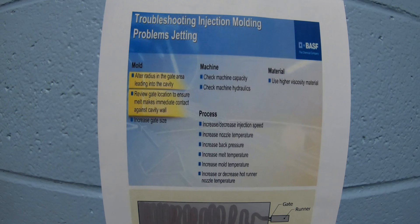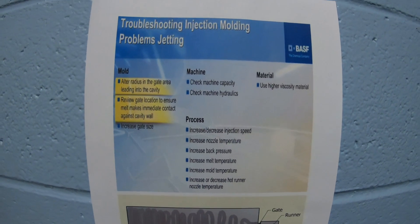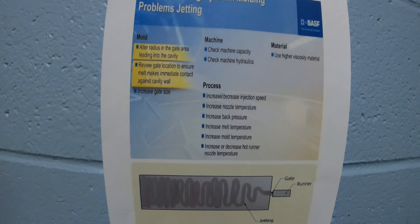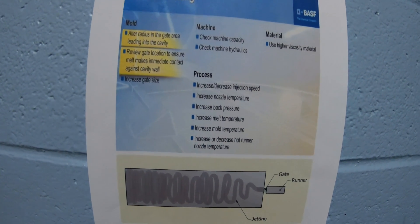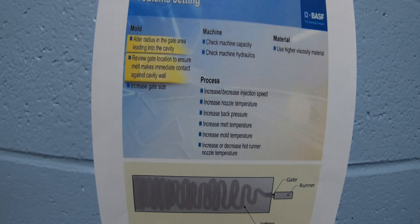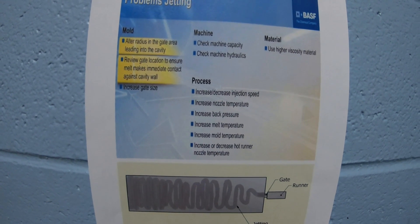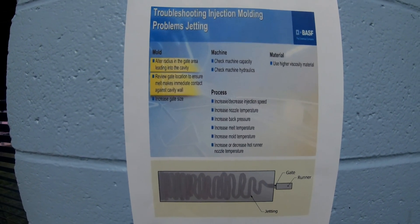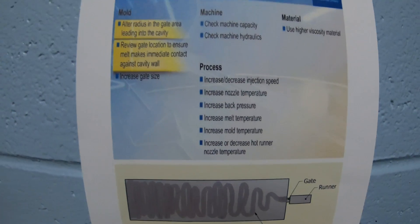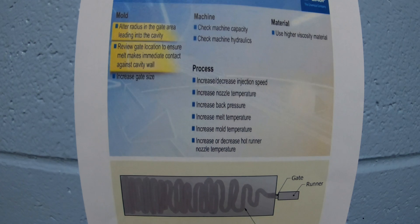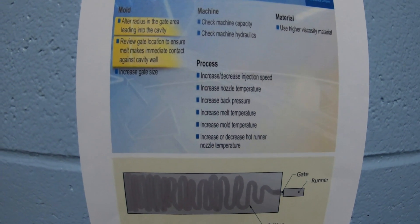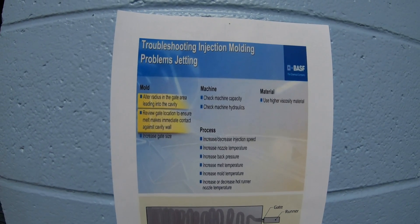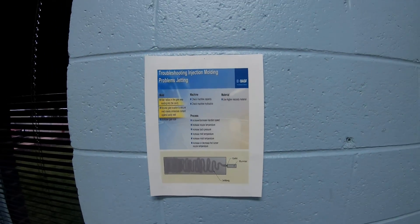On the machine side: check machine capacity and check machine hydraulics. On the processing side, the main things to do are increase or decrease injection speed, increase nozzle temperature, increase back pressure, and increase melt temperature. You can pull these troubleshooting guides online — there are a bunch of troubleshooting books you can use as well.